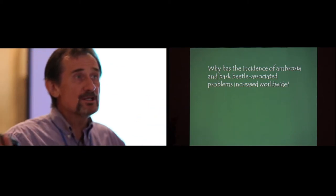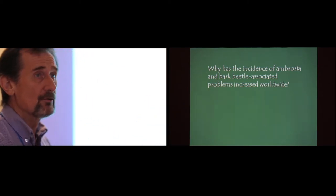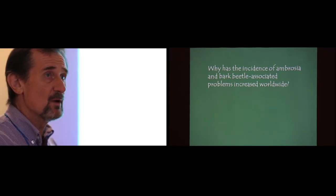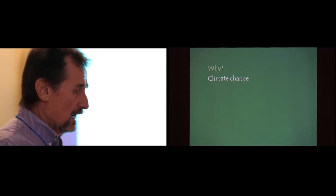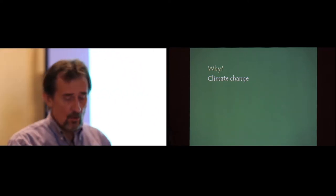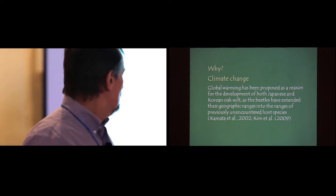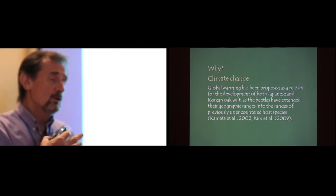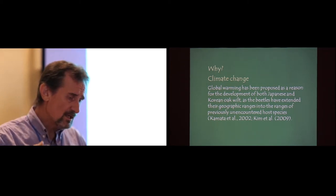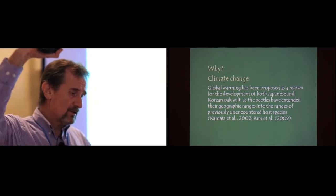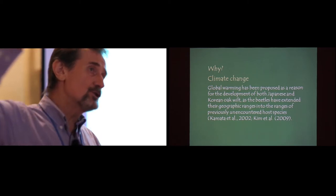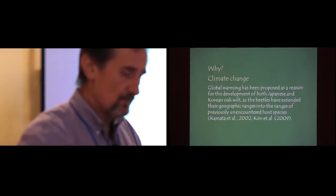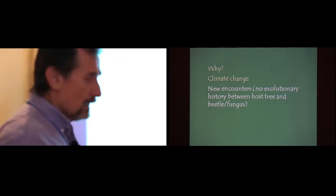The $64 question is, why are we seeing more of these happen around the world? I don't think anybody has a really, take to the bank, good answer for that, but we have some ideas. Something that's been suggested in Asia for these Asian oak wilts is climate change. And the Japanese researchers, and now the Koreans as well, feel that with climate change, global warming, the effective geographic distribution or range of these vectors has changed to overlap with some previously unencountered host trees.